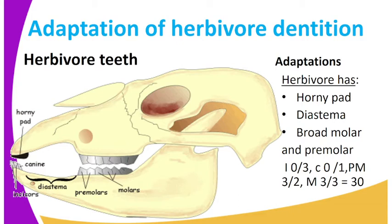And then we have the diastema. As you can see, it's a gap between the canine and the premolar. The diastema is a gap in the lower jaw separating the canines and the premolars. The diastema provides space for manipulation of food by the tongue so as to separate the newly cut vegetation from that being chewed.